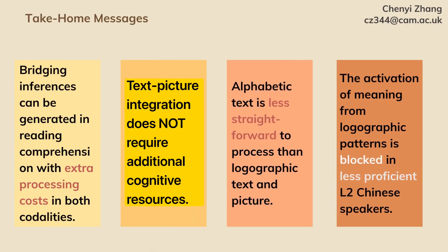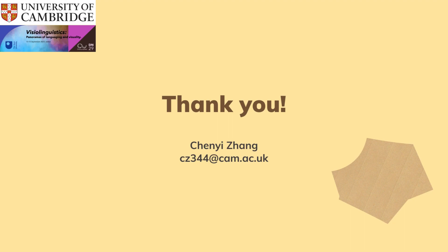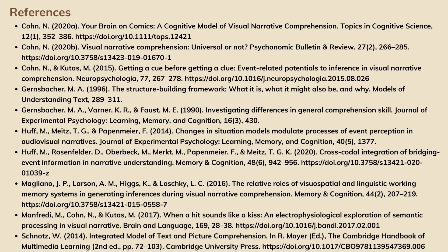Finally, some take-home messages. First, our findings suggest that the bridging inferences can be generated in reading comprehension by both L1 and L2 speakers, but this process requires extra processing costs in both textual and pictorial stories. Second, text-picture information integration does not require additional cognitive resources. However, alphabetic texts might be more difficult to process than the logographic texts or the pictures. And lastly, the activation of meaning from logographic patterns is blocked in less proficient L2 Chinese speakers, and therefore they have to process Chinese characters in a phonological way. Thank you very much for your attention, and if you have any questions or comments, please do send me an email. Here are some references that you may find interesting to read.